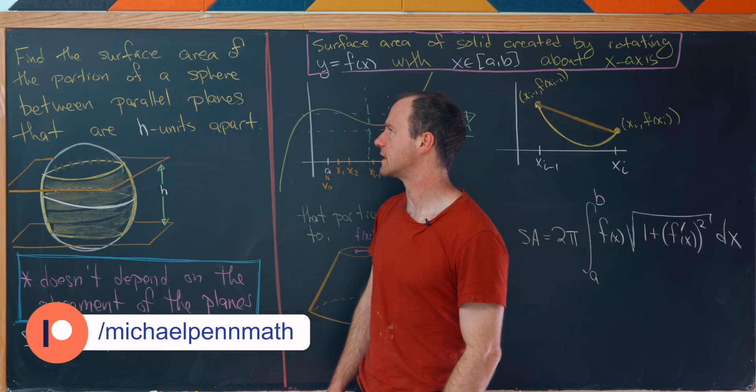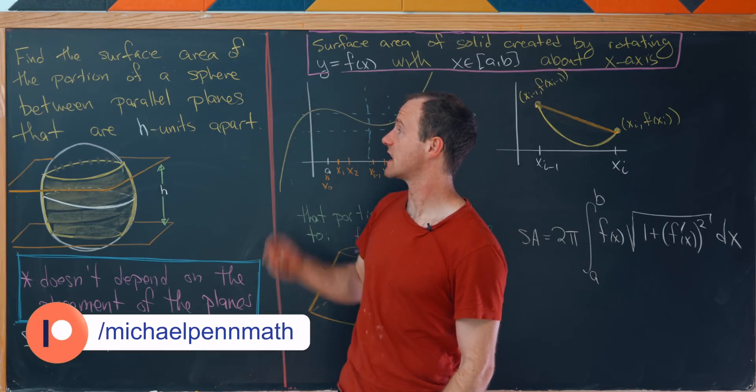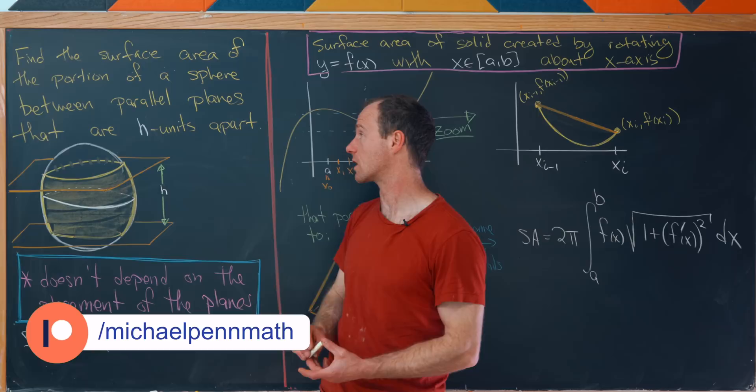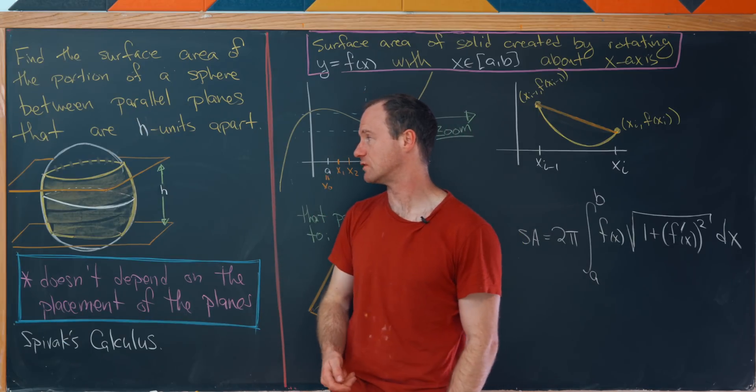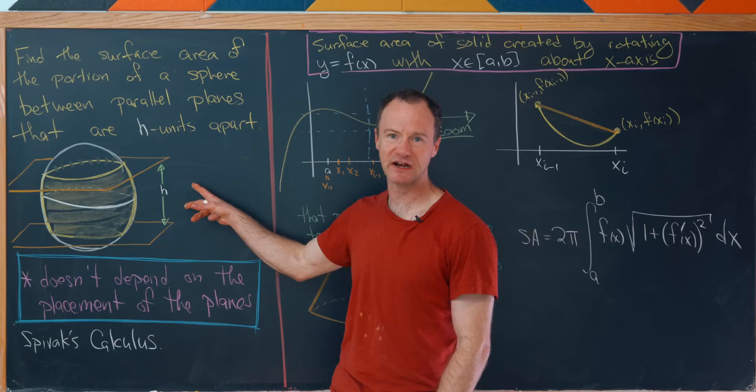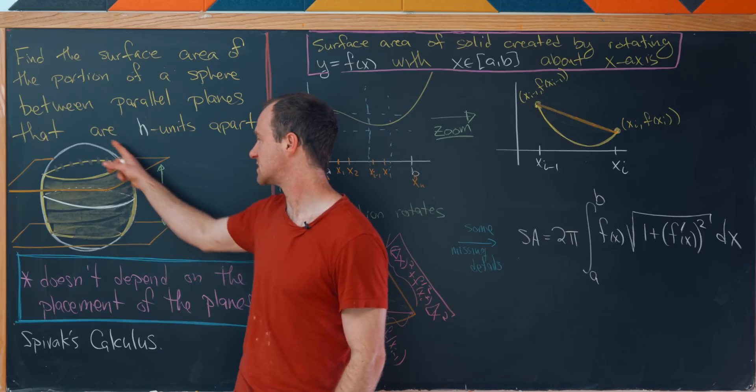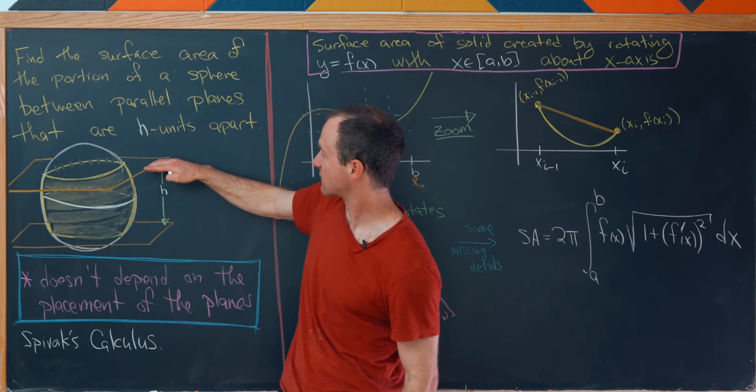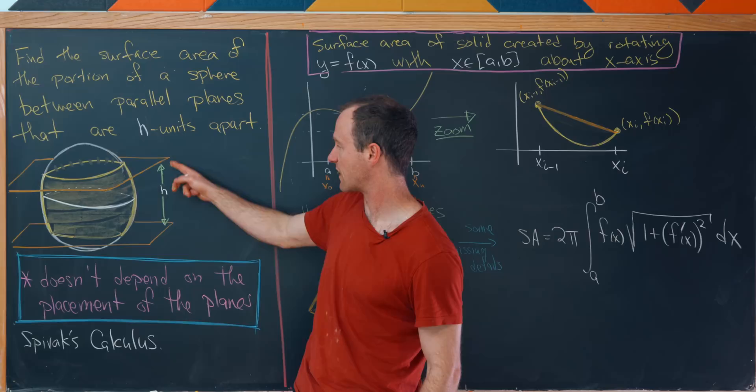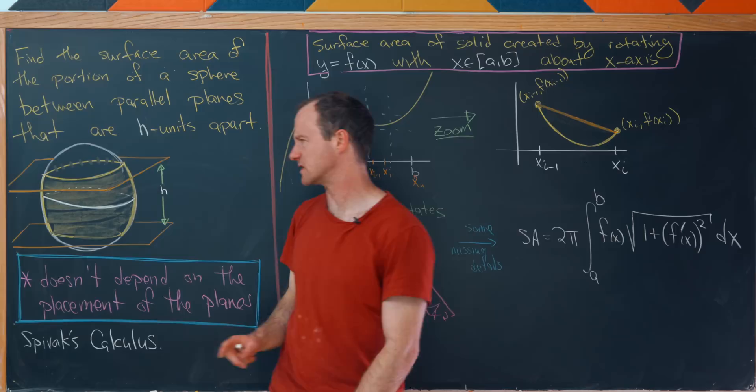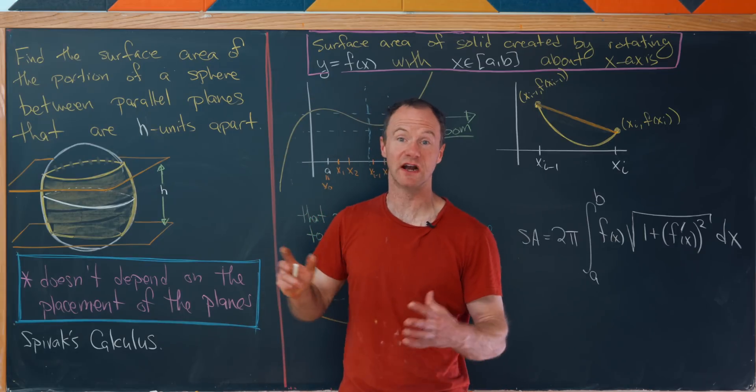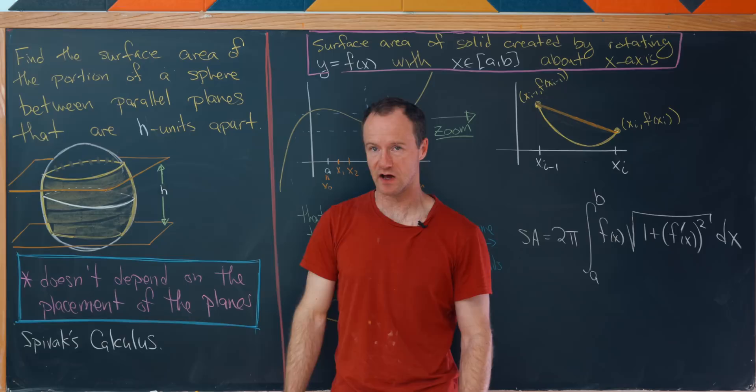Let's see what we're going for here. We'd like to find the surface area of the portion of a sphere that lies between parallel planes that are H units apart. So here's a picture that I've got. I've got this sphere and then notice I've got two parallel planes here and I've placed them H units apart. And then what I have shaded there is the portion of the sphere that we're trying to find the surface area of.